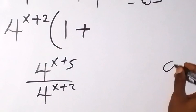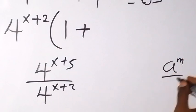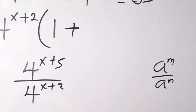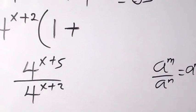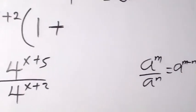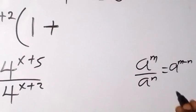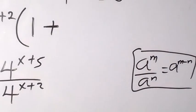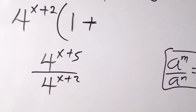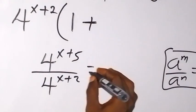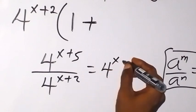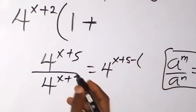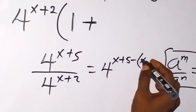From the law of indices, when we have a raised to the power m divided by a raised to the power n, this gives us simply a raised to the power m minus n — that is, we subtract the powers. So by the time we subtract the powers here, we have 4 raised to the power x plus 5 minus all of x plus 2.